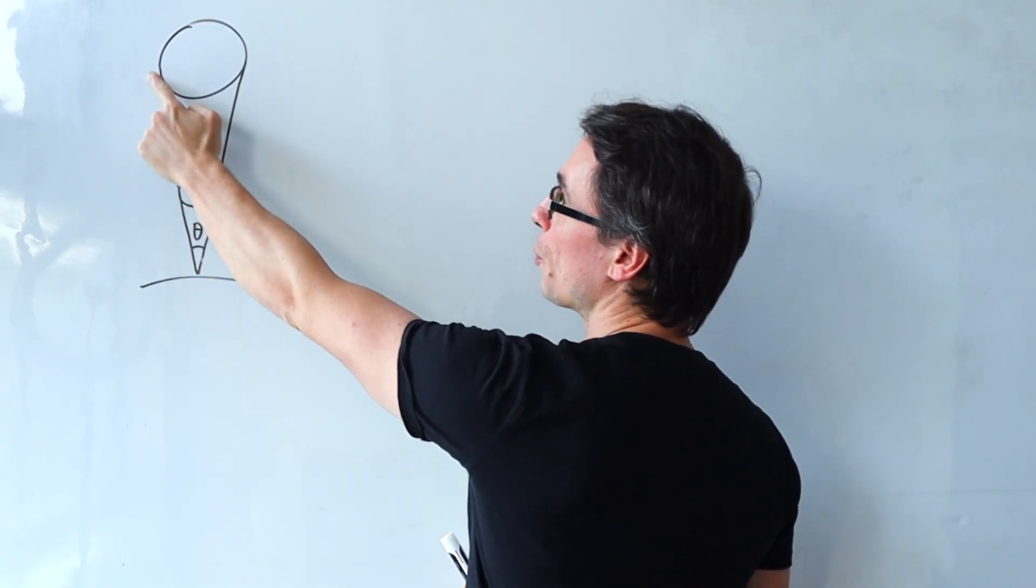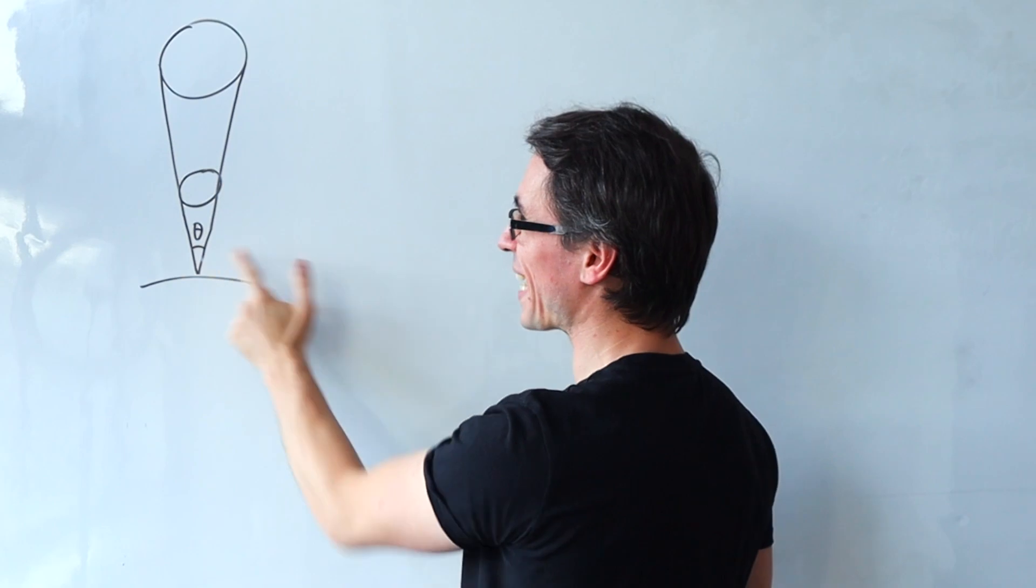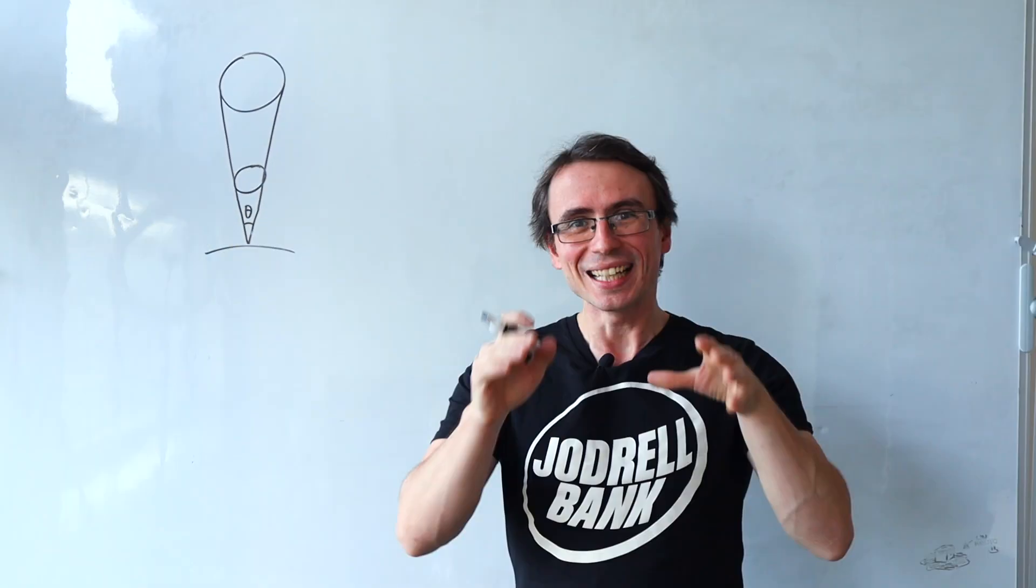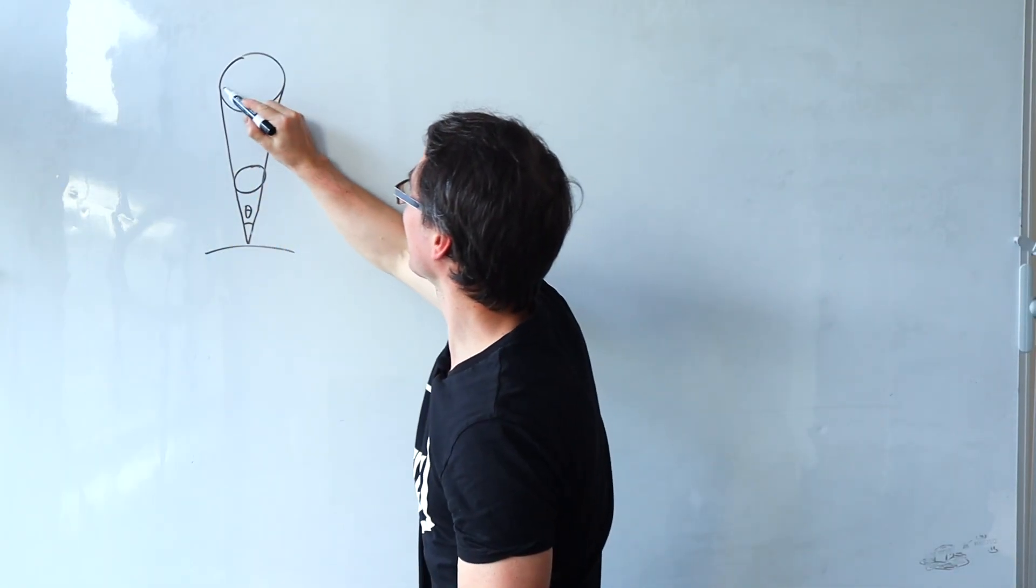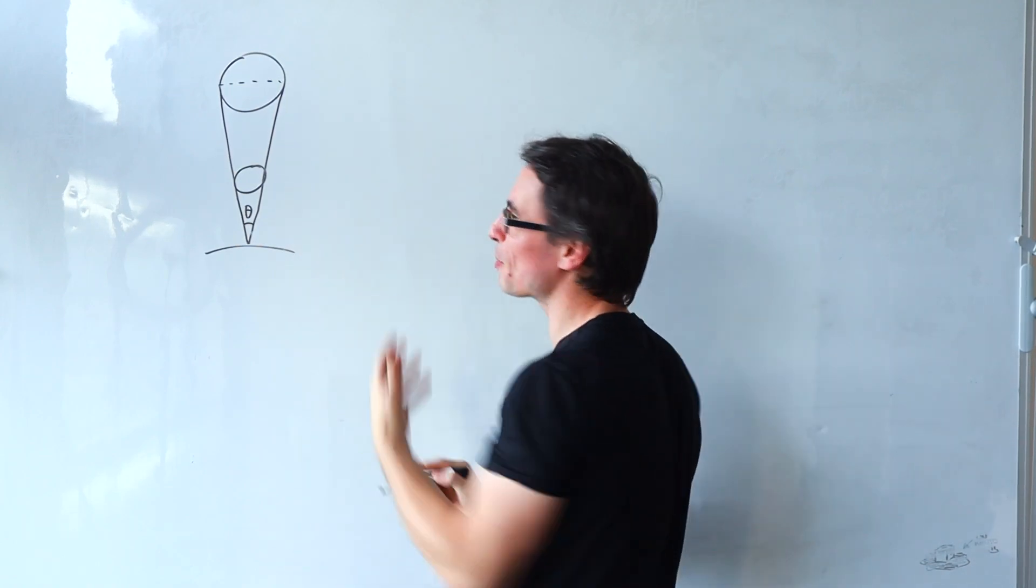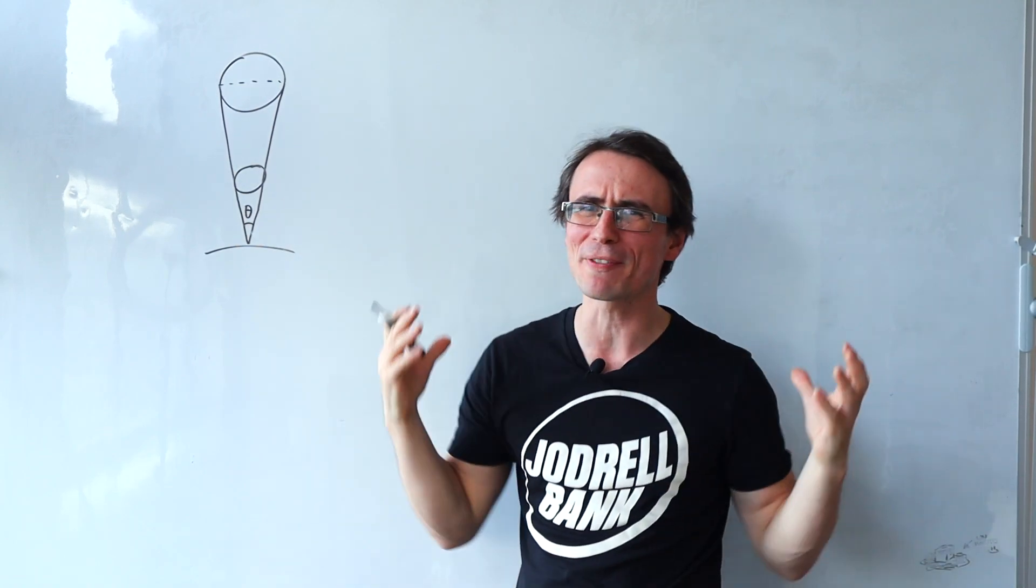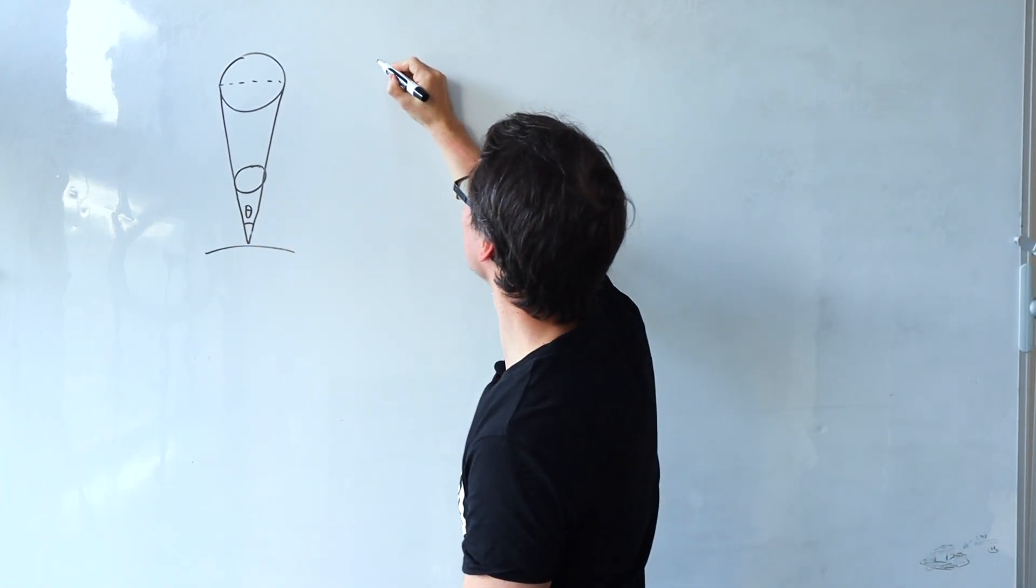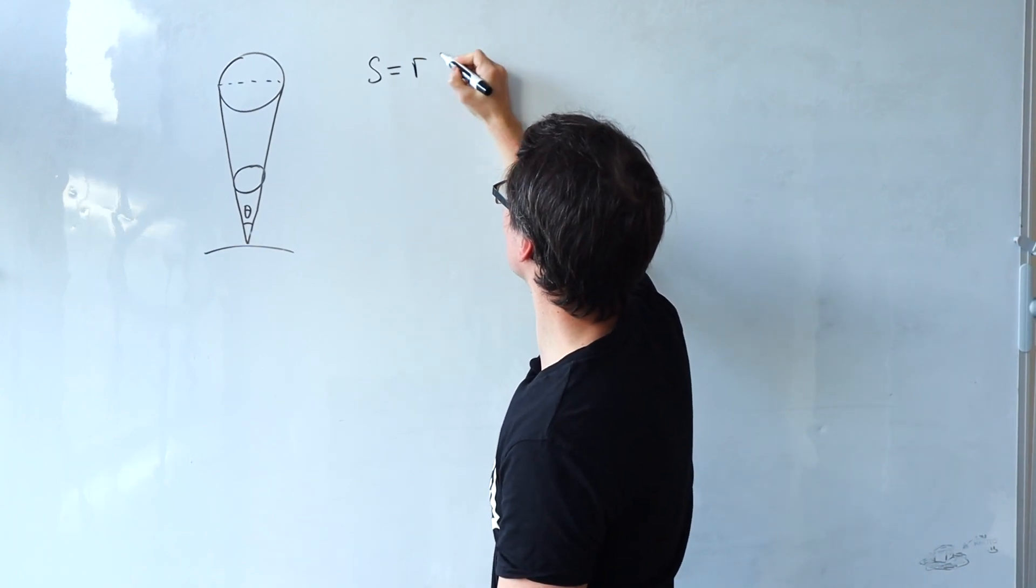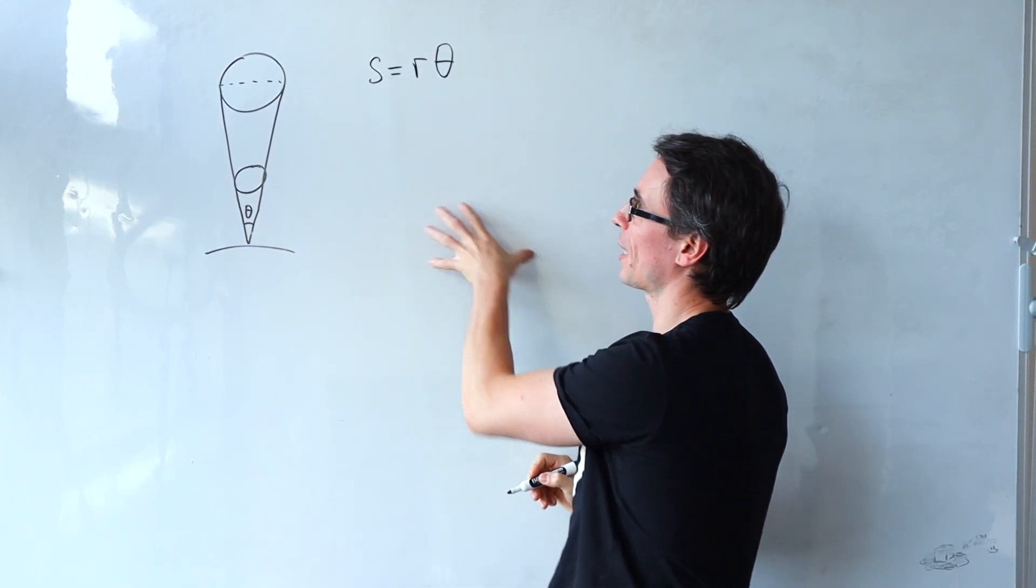In two minutes the sun will move from here to here subtending an angle theta. This arc length here we can almost assume to be a straight line and we can use one of my favorite equations from geometry that the arc length is equal to the radius multiplied by theta.